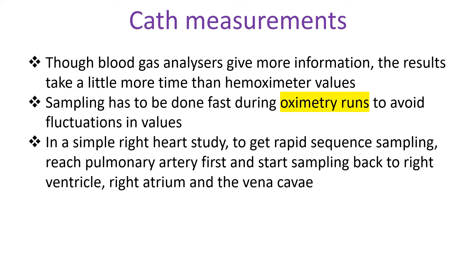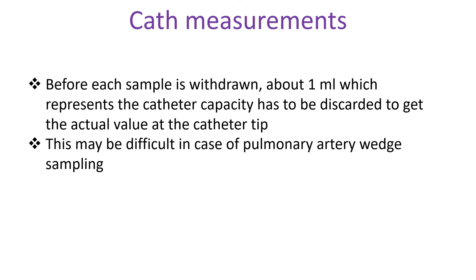In a simple right heart study, to get rapid sequence sampling, reach the pulmonary artery first and start sampling back to right ventricle, right atrium and the venae cavae. Before each sample is withdrawn, about 1 ml, which represents the catheter capacity, has to be discarded to get the actual value at the catheter tip.